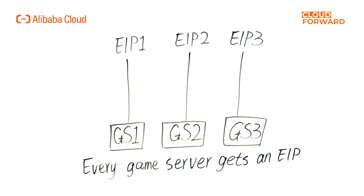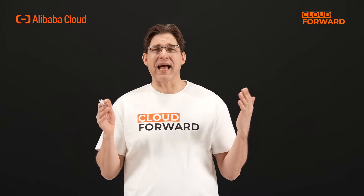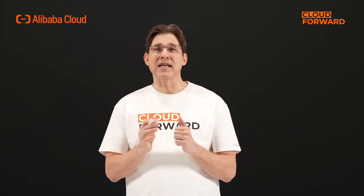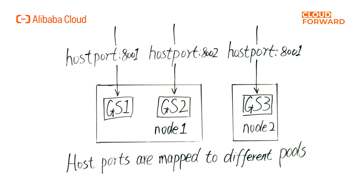In the OKG mode, each room server corresponds to a pod. For session-based games, the currently available networking models include Kubernetes host port, Alibaba Cloud NAT Gateway, Alibaba Cloud SLB, and Alibaba Cloud EIP. Each networking model has its own characteristics and is suitable for different scenarios.